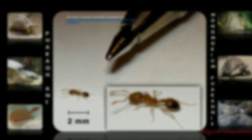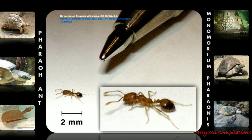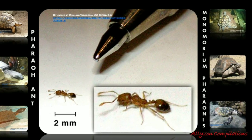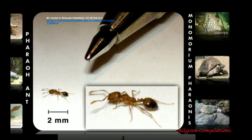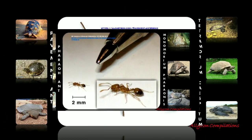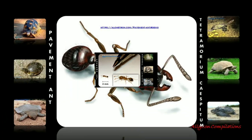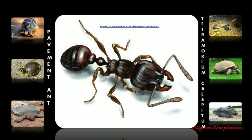Ants are social insects, which means they live in large colonies or groups. Depending on the species, ant colonies can consist of millions of ants.